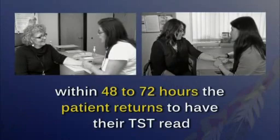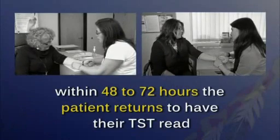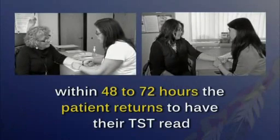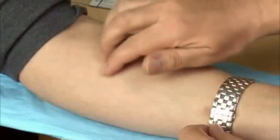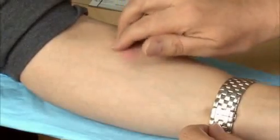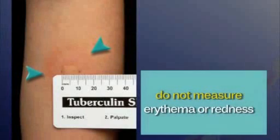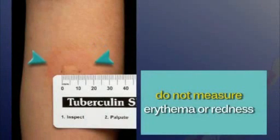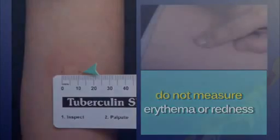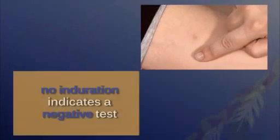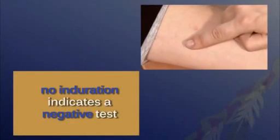Within 48 to 72 hours, a patient will return to have their TB skin test read. Inspect the TST site in a well-lit room. The site may have some erythema or redness, but this should not be measured, as you are looking for a raised formation or induration. No induration indicates a negative skin test.